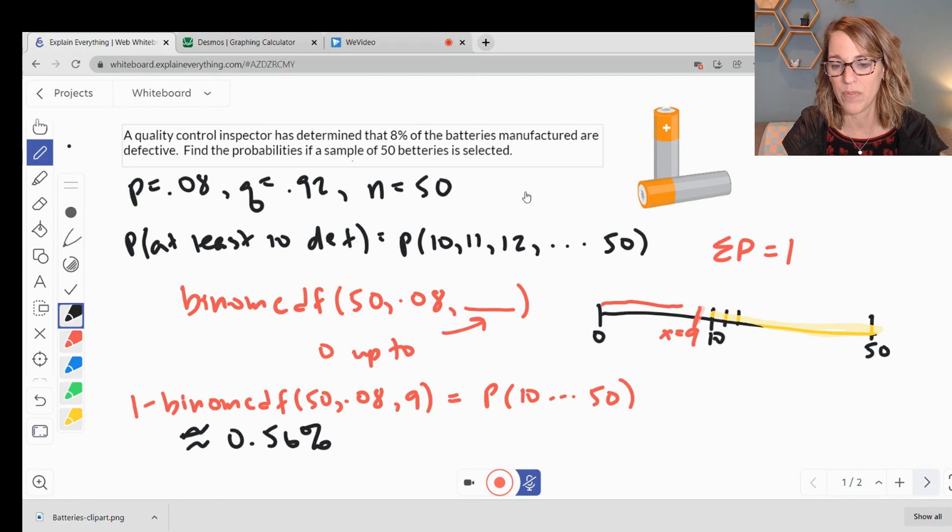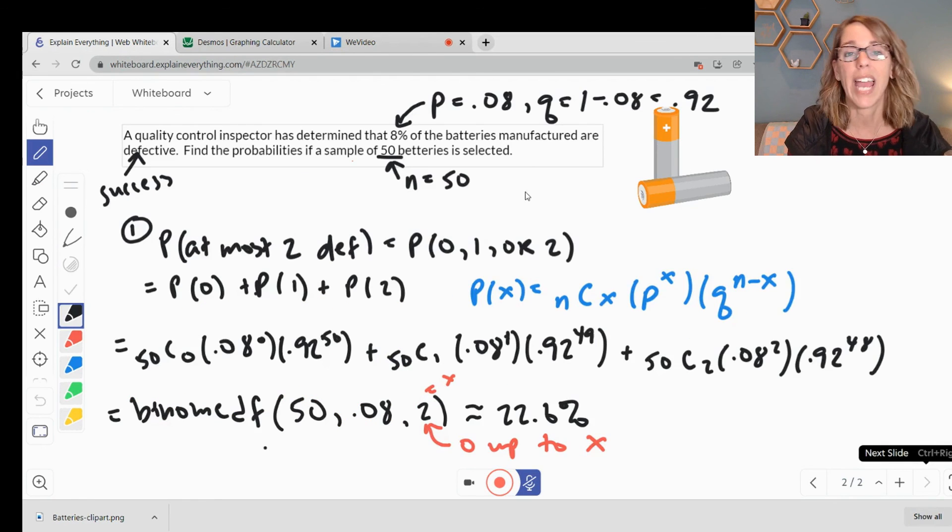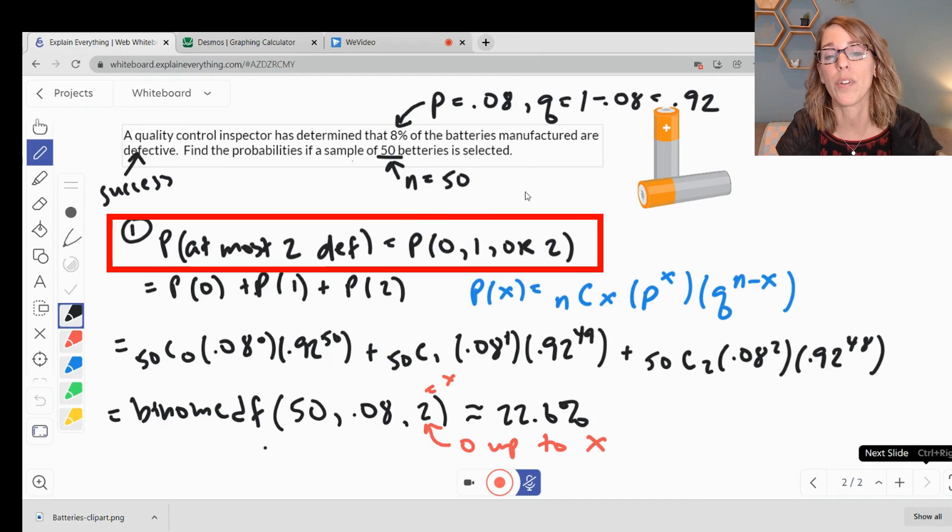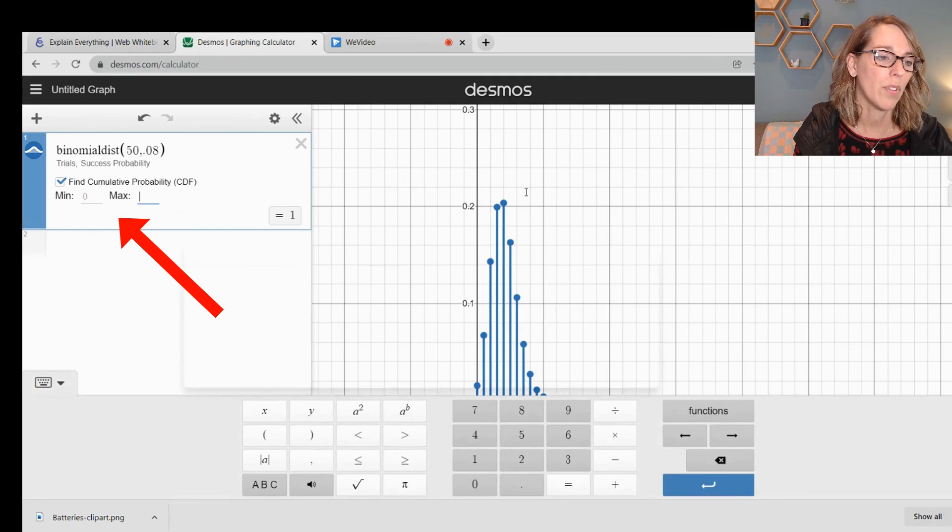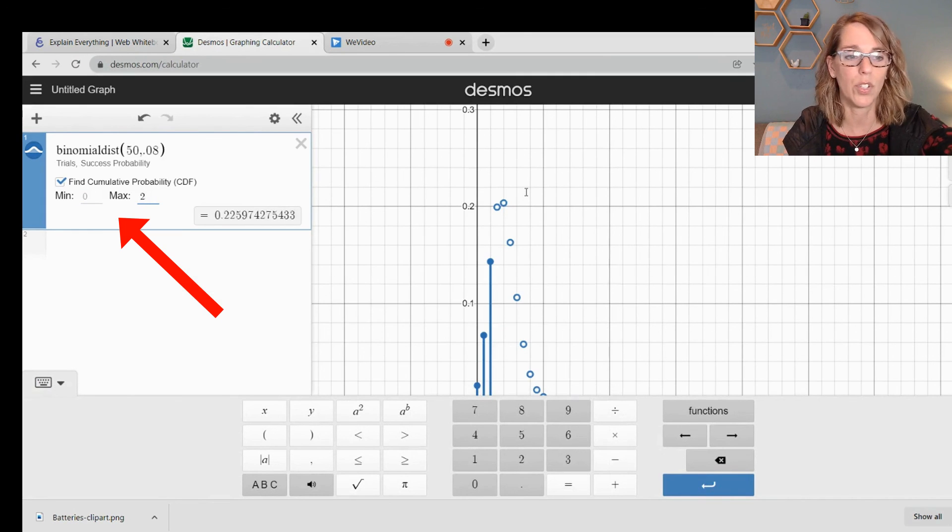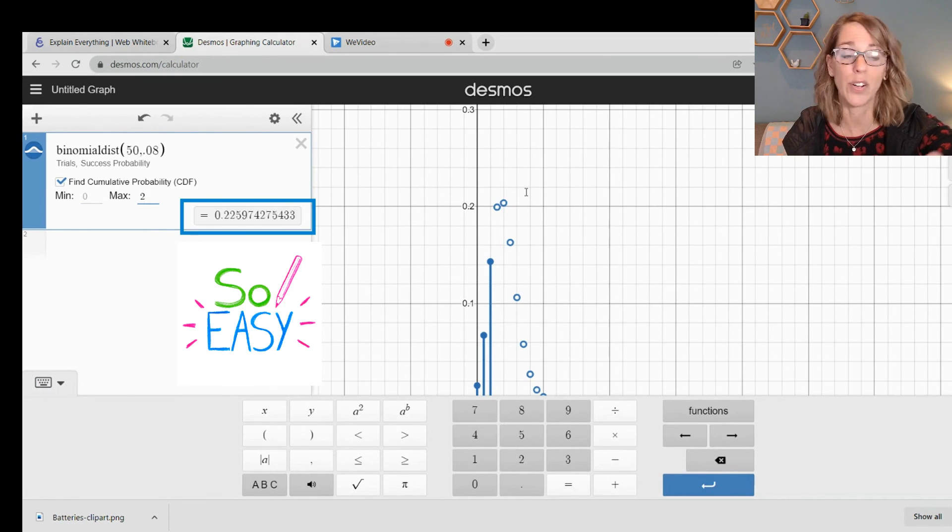So if I go to my first example, this one was at most 2 defective. So I wanted 0, 1, or 2. 0 was the minimum that I wanted, 2 was the maximum. So back over to Desmos. For that minimum, I do want 0. For the maximum, I want 2. And I go ahead and hit enter. I don't even hit enter. There it is. 22.6%. Super easy.